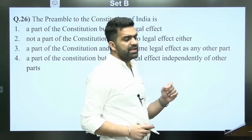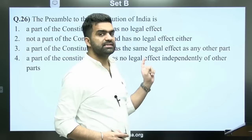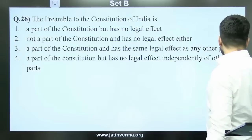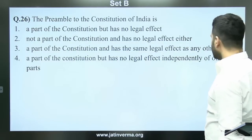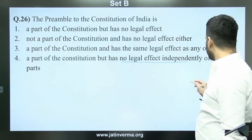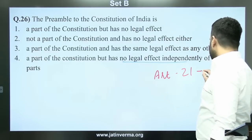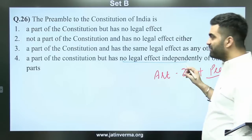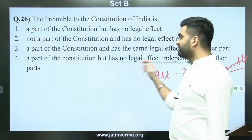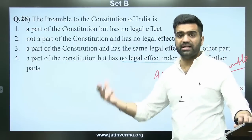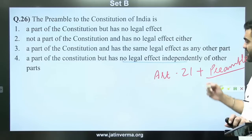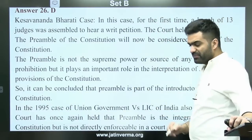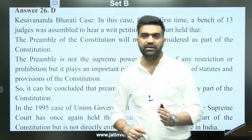In the August 2017 Right to Privacy judgment, the Supreme Court cited Article 21 along with the Preamble. The Preamble cannot be used independently to legally enforce rights in a standalone way. However, if a fundamental right or another constitutional article echoes the same provision, the Preamble can be relied upon alongside it. It cannot be enforced on a standalone basis.